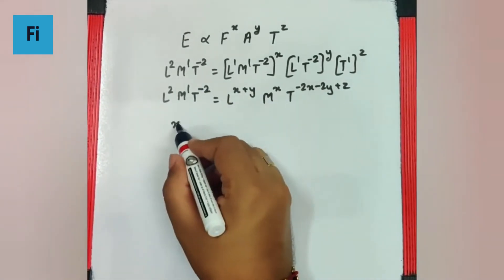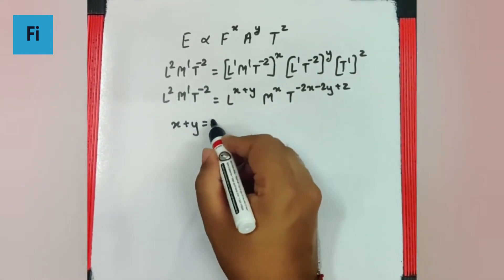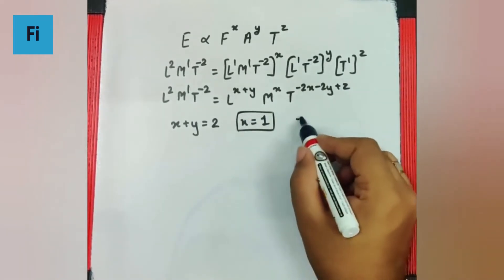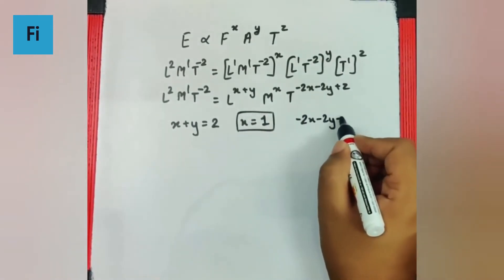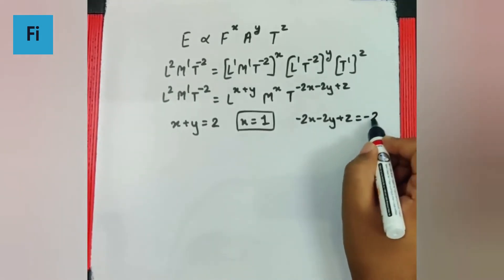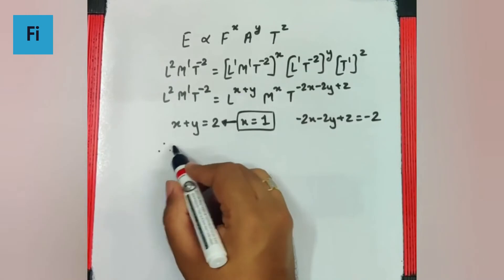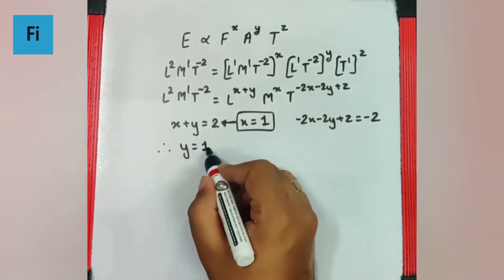So from the power x plus y is 2, x is 1, we got the value of x. Minus 2x minus 2y plus z is minus 2. Now if x is equal to 1 here substitute, then y ka value bhi a jayega 1.